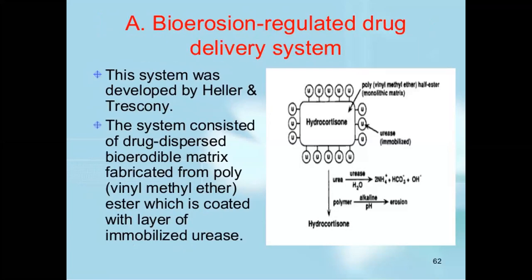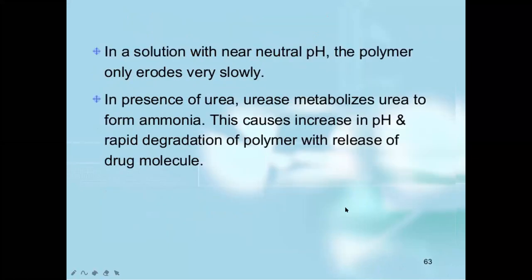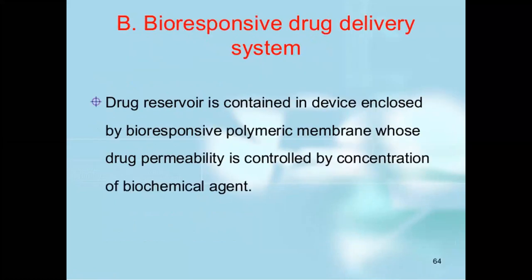The bio-erodible drug delivery system was developed by Heller and Trescony. It consists of a drug-dispersed bio-erodible matrix fabricated from polyvinyl methyl ether half-ester, which is coated with a layer of immobilized urease. There is a monolithic matrix containing hydrocortisone with a urease coating. When urease and urea are present, there is a reaction between the polymer and hydrocortisone. In a solution with near-neutral pH, the polymer erodes very slowly. In the presence of urea, urease metabolizes urea to form ammonia, which causes an increase in pH and rapid degradation of the polymer with release of drug molecules.